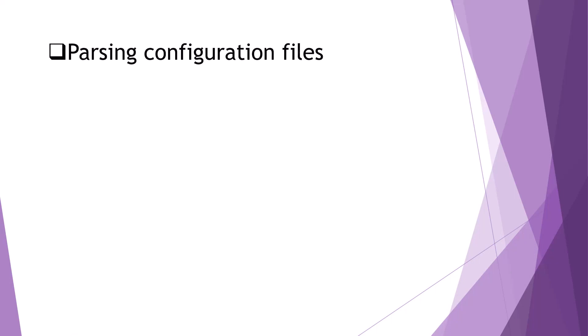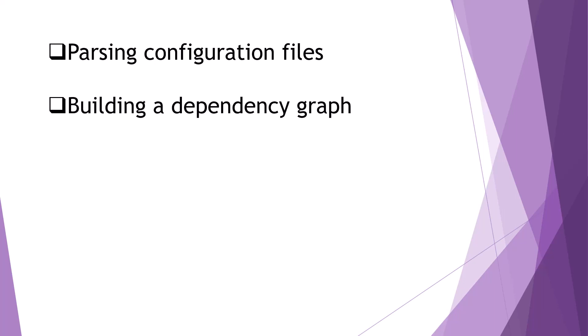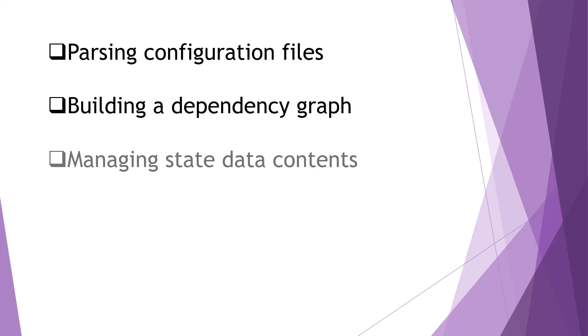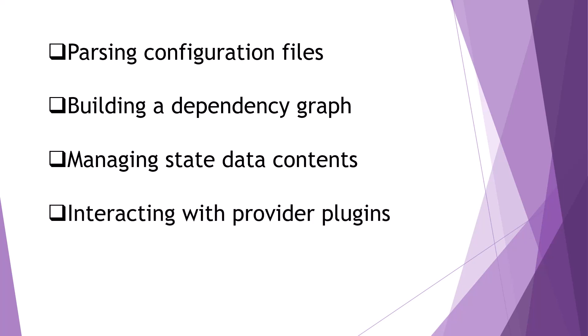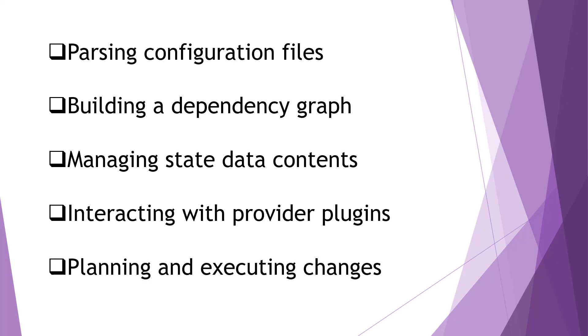The core binary provides the key functionality of Terraform, including parsing configuration files written in either JSON or HCL, building a dependency graph of configuration objects, managing the contents of state data, interacting with provider plugins, and planning and executing changes to infrastructure. The Terraform binary doesn't run as a service or from a central management point — it's simply a command line tool that executes whatever command you give it.